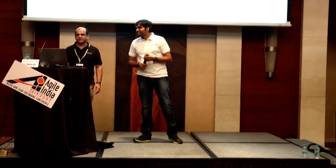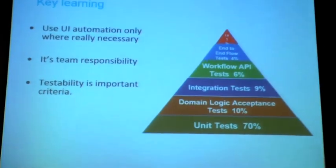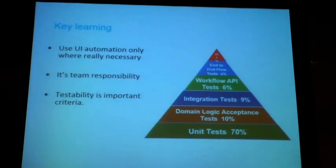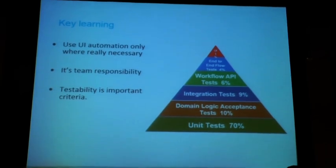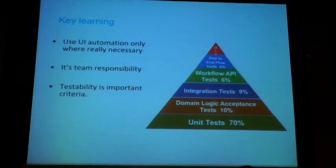The key learnings: use your automation only where really necessary — don't just use it because it is available. Automation is a team's responsibility, not just a department's responsibility — everybody needs to contribute. Testability is an important criteria: when designing new features, you have to keep in mind that you need to build an application that can be tested easily and you should be able to build the testing network around it easily.